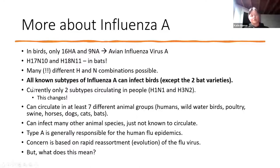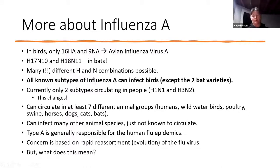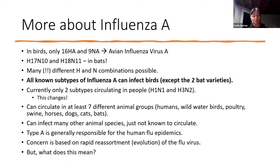It's really important to keep in mind that all known subtypes of influenza A can and do infect birds, except for the two bat varieties. To date, there are really only two subtypes that circulate in people — H1N1 and H3N2. We all know that the flu vaccine we get sometimes is not very effective, and that's because of the reassortment and genetic mutations that occur in influenza A — it's a constantly changing and evolving virus.